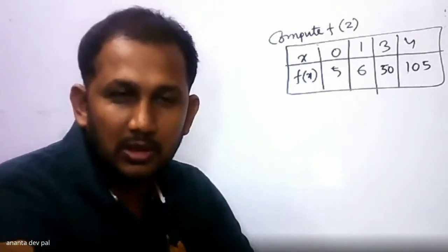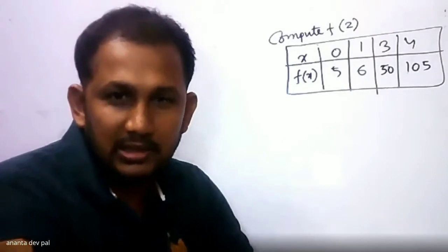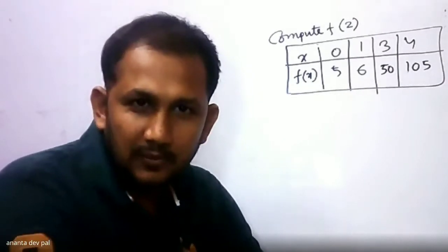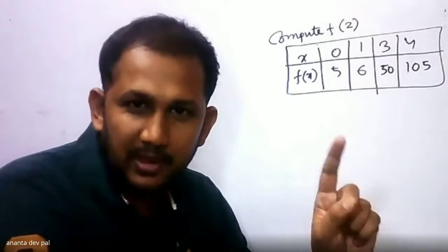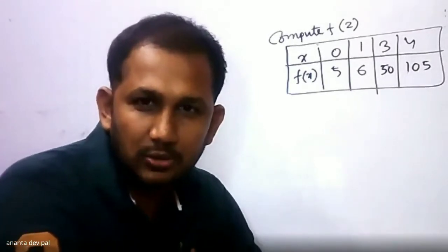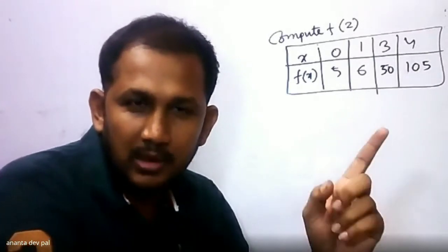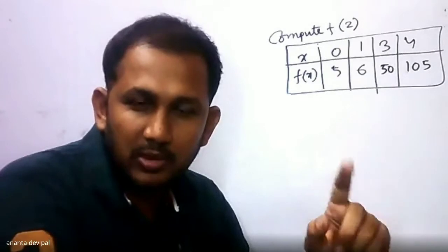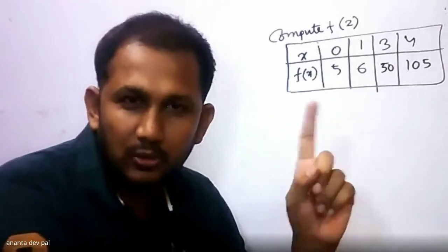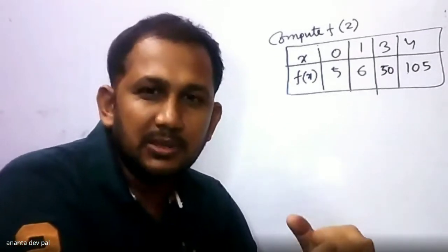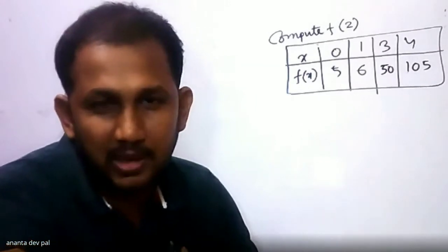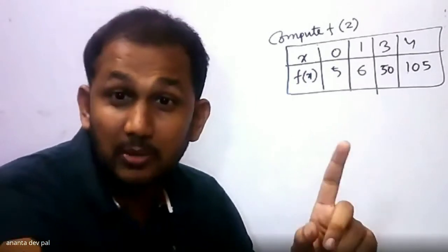This is the Lagrange interpolation formula. Why is Lagrange interpolation formula used here? The values of x are different — the gap intervals of x are different. The difference between 1 and 0 is 1, between 3 and 1 is 2, and between 4 and 3 is 1. So all are not equal. Lagrange interpolation formula is mainly used for unequal intervals of x.